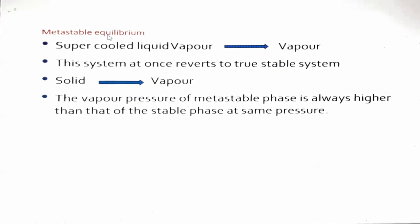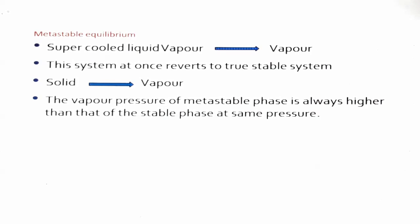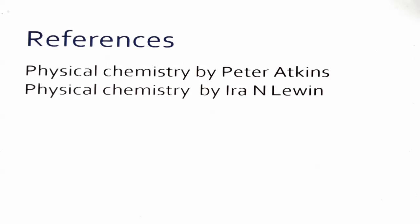The metastable equilibrium corresponds to the AO curve. At metastable equilibrium, the solid phase does not convert into vapors directly; instead, super-cooled liquid converts into vapors, establishing a super-cooled liquid–vapor equilibrium. This can revert to the true stable system, which is the sublimation curve. The vapor pressure of a metastable phase is always higher than that of the stable phase at the same temperature. These are the references — thank you.